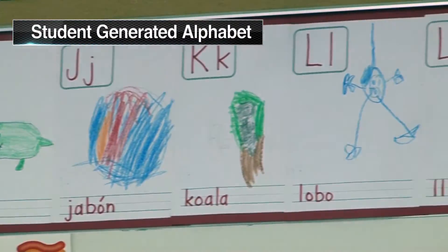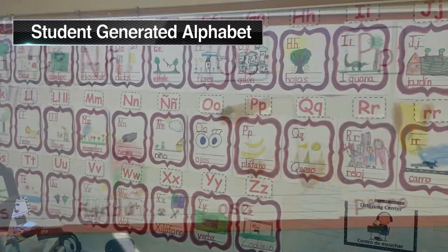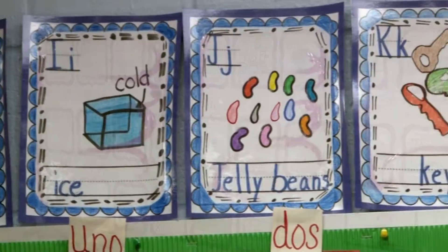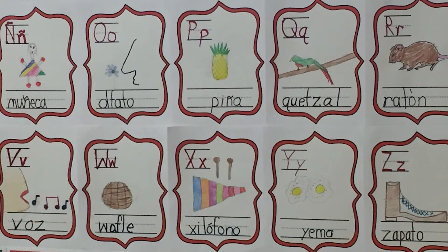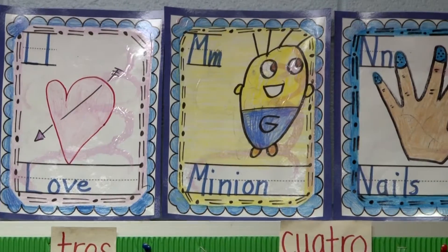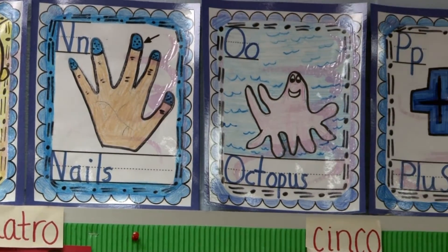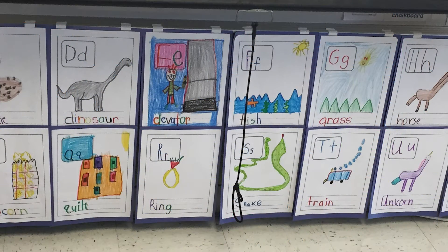Student-generated alphabets are alphabets created by students in both English and Spanish. Students will create the alphabet using grade-appropriate vocabulary that represents the level of academic language used in the classroom. Students should be able to easily distinguish between the English alphabet and the Spanish alphabet. This can be accomplished by using red or blue frames, dots, or markers. The location of the alphabet must be visually accessible by all students by using either large print or placing the alphabet at eye level.